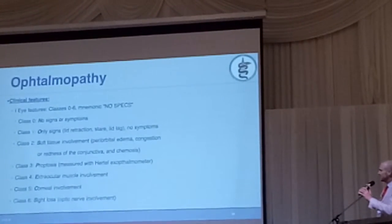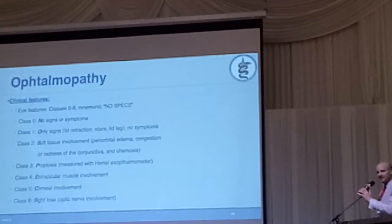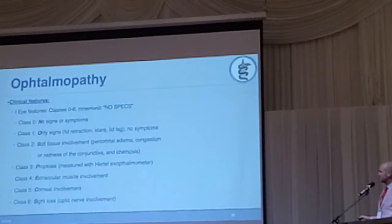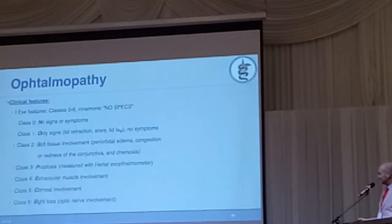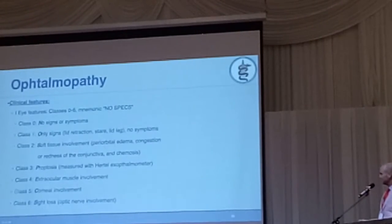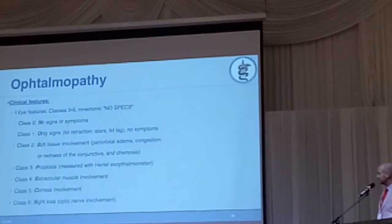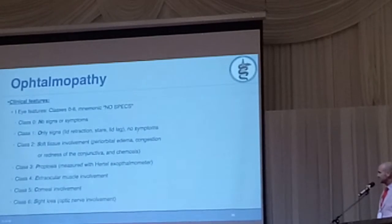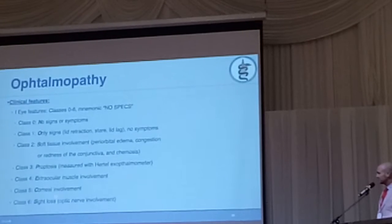There's a whole classification of ophthalmopathy. It begins with no signs or symptoms — only signs like injections. Then there's soft tissue involvement, periorbital edema — that's the patient you saw in the first slide. Then proptosis, eventually causing extraocular muscle involvement, corneal involvement, and eventually you can lose sight.